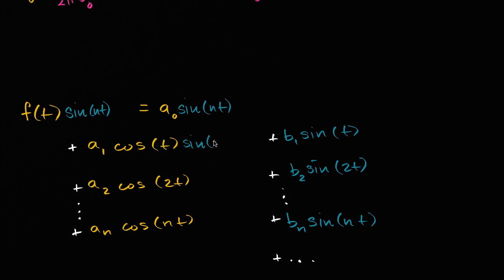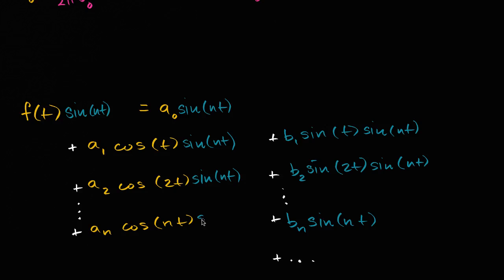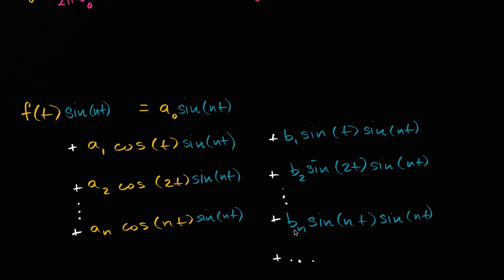We multiply every term — sine of nt, sine of nt, and so on — taking each of these terms and multiplying by sine of nt for all terms, continuing on forever for an infinite number of terms. Now let's take the integral of both sides of this equation — the definite integral.